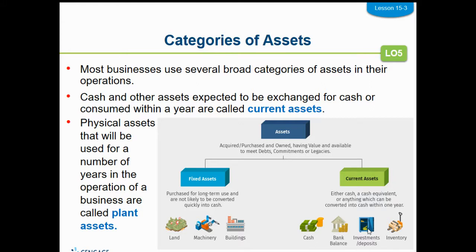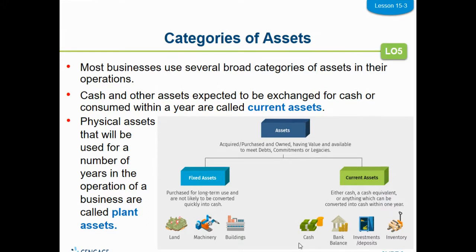Current assets are going to be assets that can be turned into cash within a year. So if you look down here, things like cash, your bank, investments, inventory — things that can be turned into cash quickly within a year. We call those current assets.